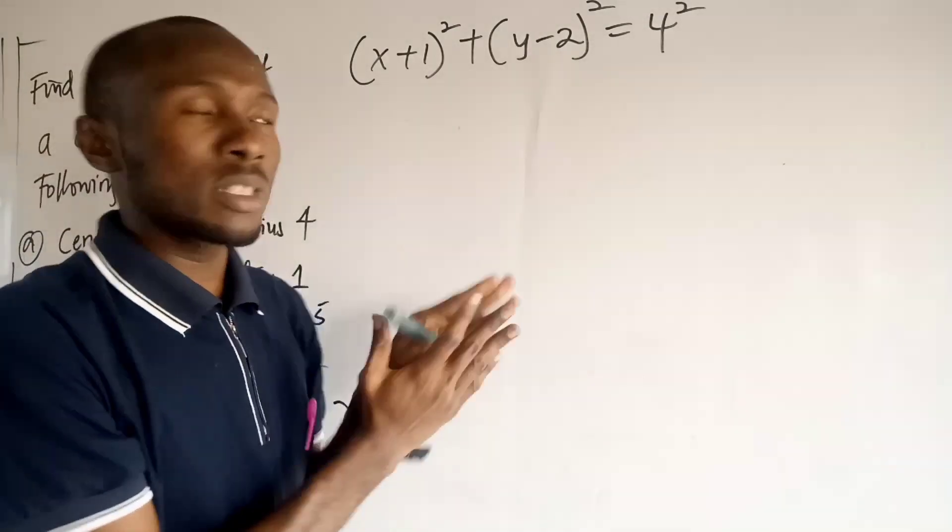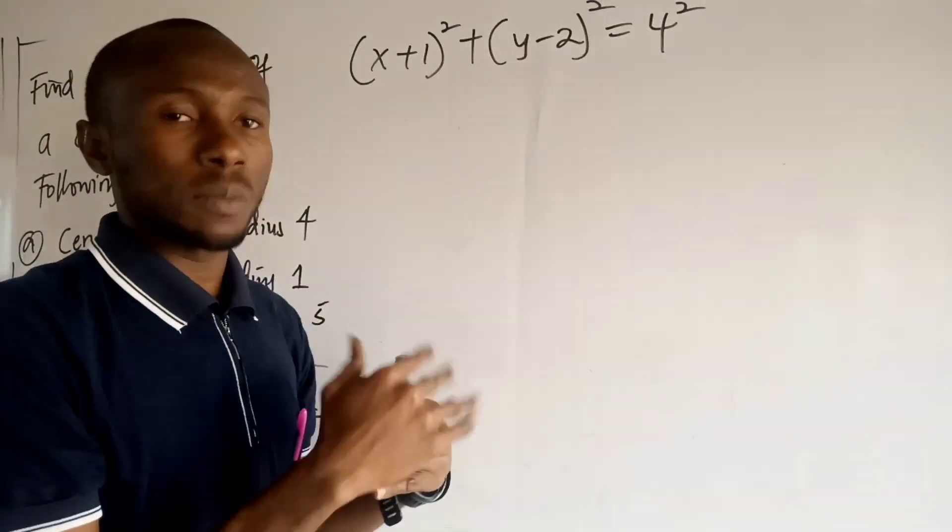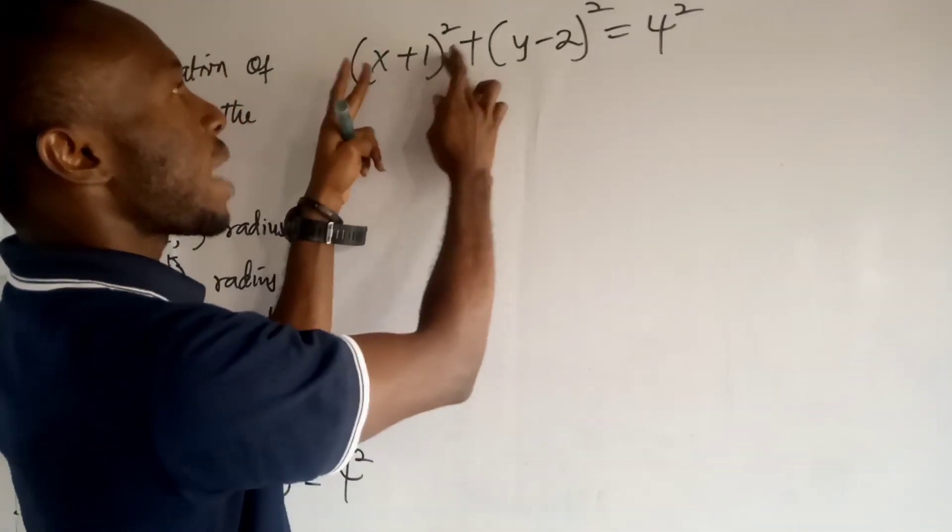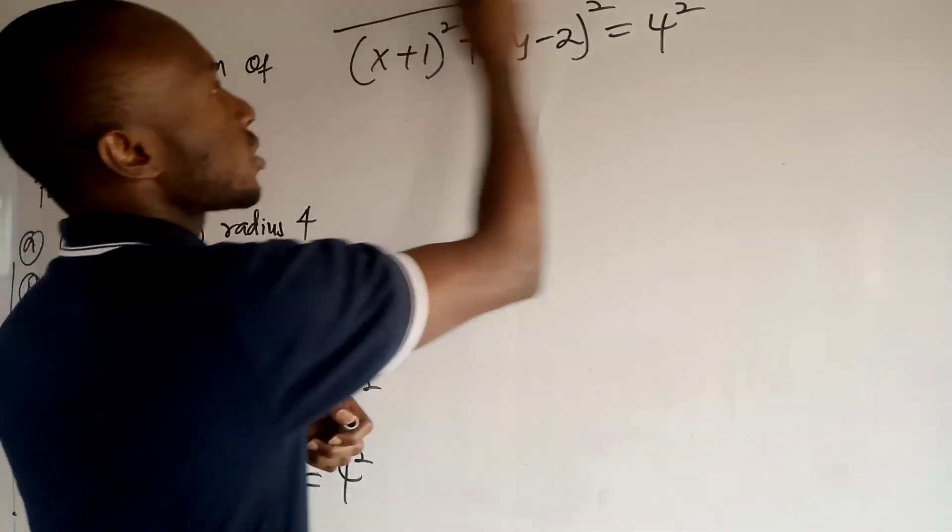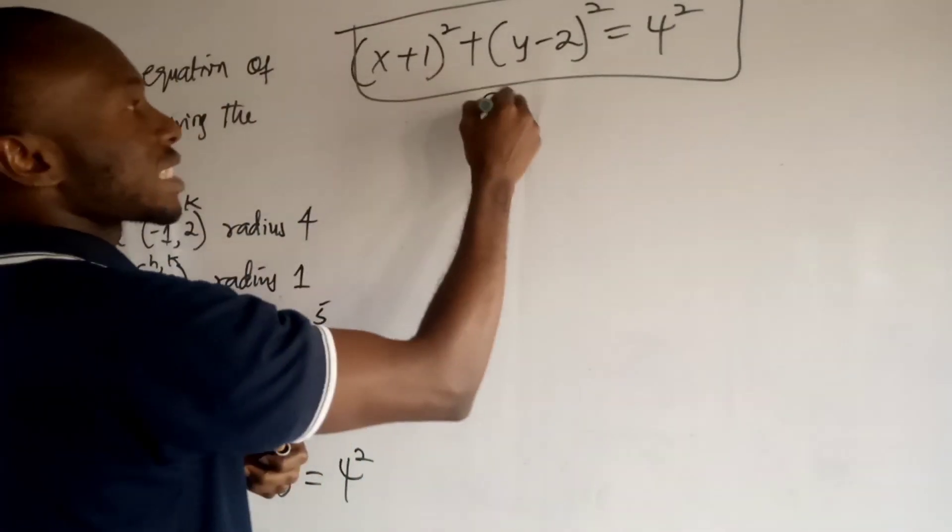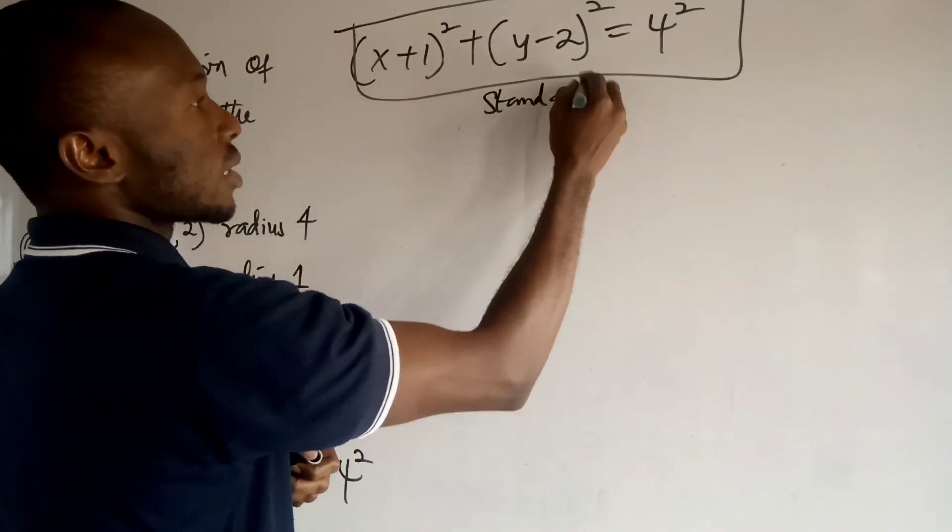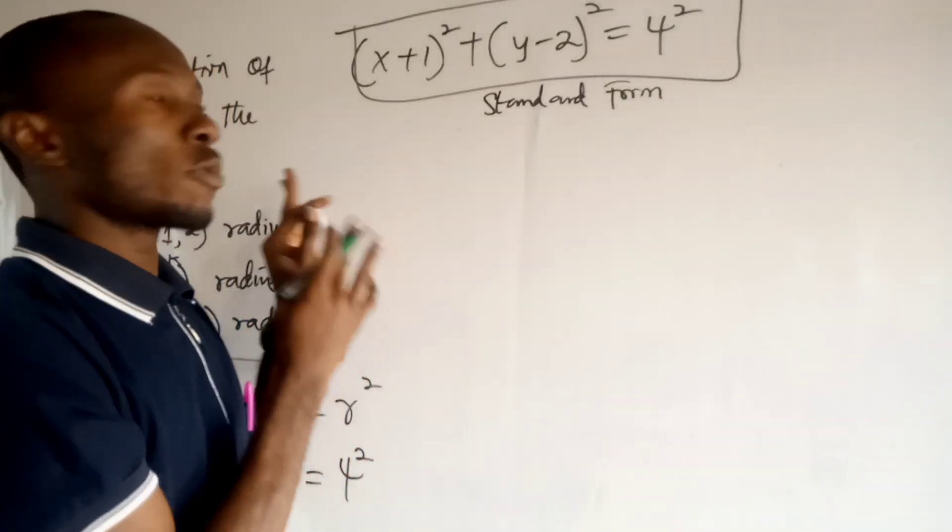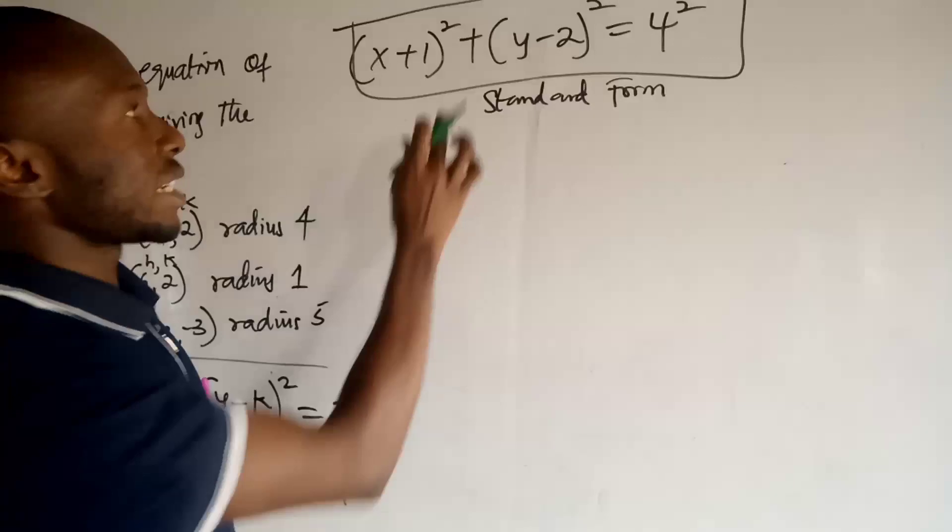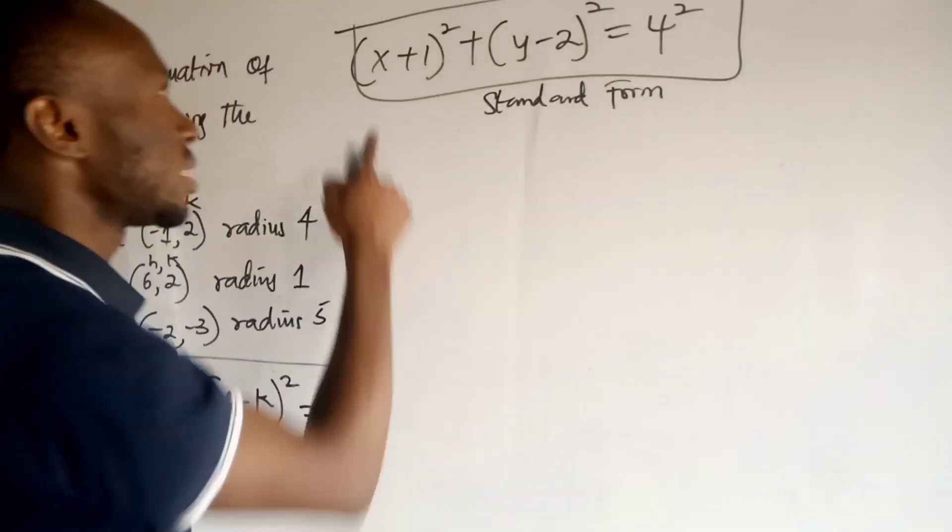Now, if they ask you to put this equation in a general form, that means you're going to expand all these guys and get the general form of the circle. This one is called the standard form. Then if you're asked to put the equation of a circle in a general form, then we go ahead and expand this guy. So let's just expand it.